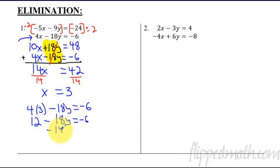What is the y? I can choose any equation along the way here. So how about I'm going to choose that equation right there. So I'm going to say 4x, so 4 times 3, minus 18y equals negative 6. And 12 minus 18y equals negative 6.